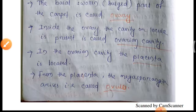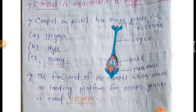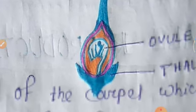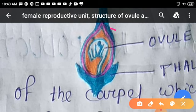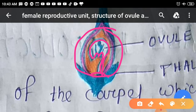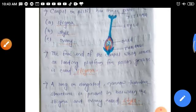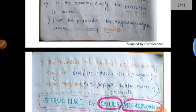In the ovarian cavity, the placenta is located. From the placenta, the megasporangium arises — that is called the ovule. From the placental wall, these ovules arise.